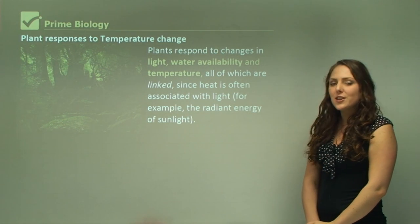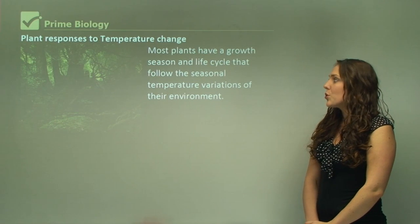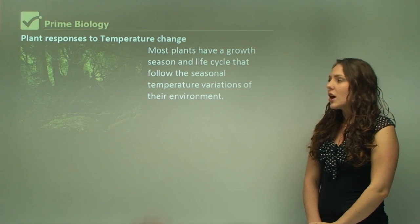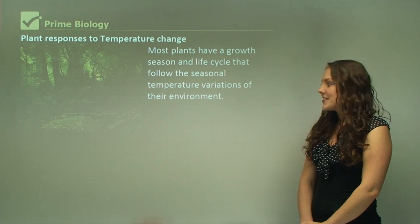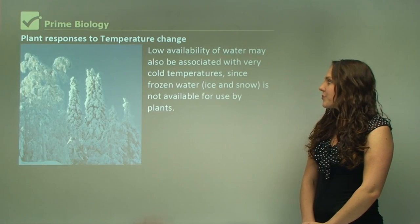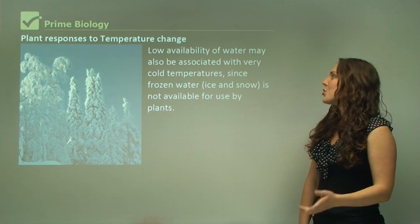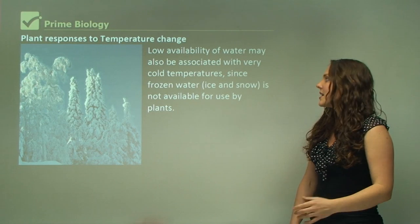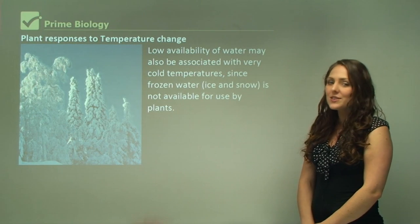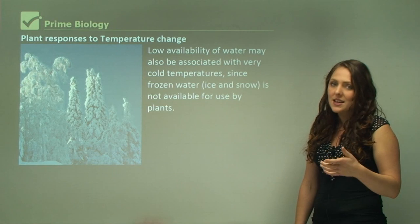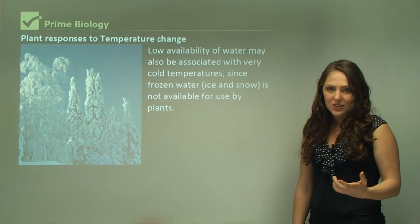For example, the radiant energy of sunlight. Most plants have a growth season and a life cycle that follow the seasonal temperature variations of their environment. Low availability of water may also be associated with very cold temperatures, since frozen water — ice and snow — is not available for use by plants, the same as for any organism, including humans.